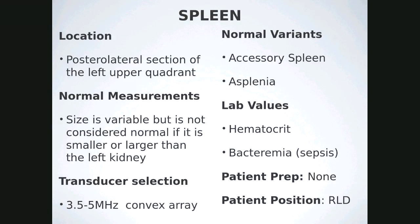Week two, lecture two — continuing with the spleen. It's located in the posterior lateral aspect of the left upper quadrant. The size is variable, but the upper limits of normal is 13 centimeters. It should be about the size of the kidneys, so if the kidneys are between 9 and 12 centimeters, you gauge whether the spleen looks enlarged by comparing it to the left kidney.